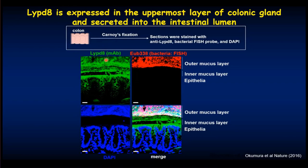To visualize the outer and inner mucus layers, microbiota was also stained. LYPD-8 was found to be accumulated at the interface between the outer and inner mucus layers. Thus, LYPD-8 is highly expressed in the uppermost layer of the colonic gland, secreted and accumulated at the interface that is exposed to the microbiota.